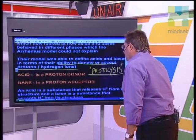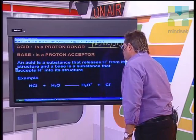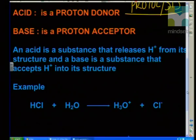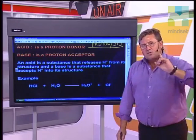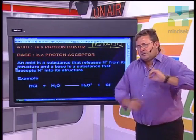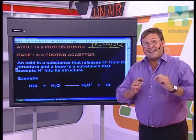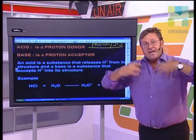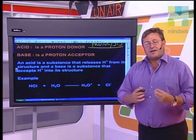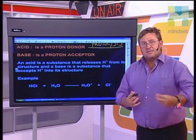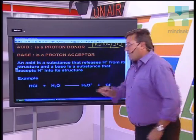So an acid is a substance that releases hydrogen ions from its structure, and a base is a substance that accepts hydrogen ions into its structure. Let's have a look at a very familiar example. A lot of you will probably look at that and say: we saw this in the Arrhenius model — isn't Arrhenius supposed to be outdated? No one said Arrhenius was wrong; it's just that a better model was needed to explain things. We can certainly take examples from Arrhenius and apply and upgrade the thinking.